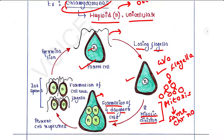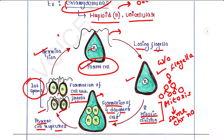The parent cell then ruptures, and the four daughter cells come out. They then form a cell wall and flagella, and are now called zoospores. Each zoospore will germinate and grow into an adult cell. In this way, algae reproduce by the asexual mode of reproduction.